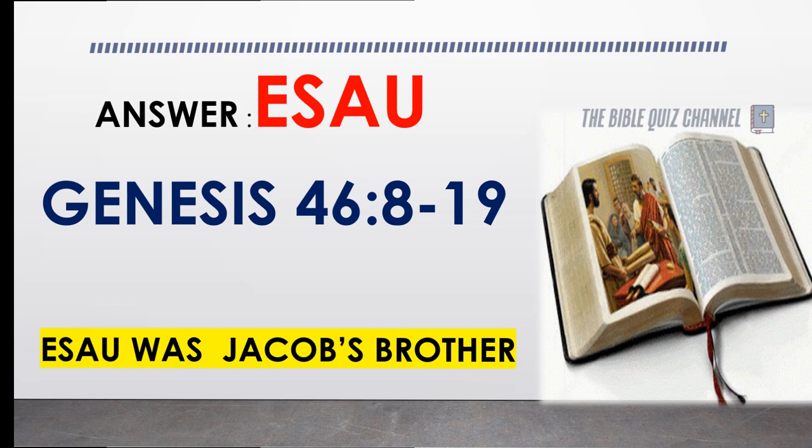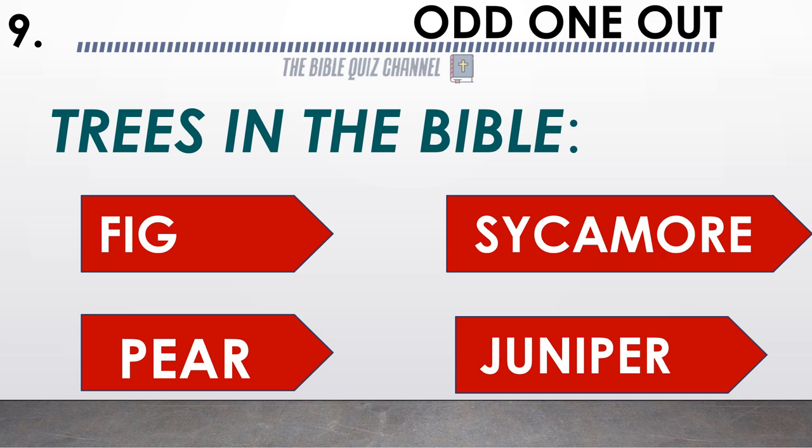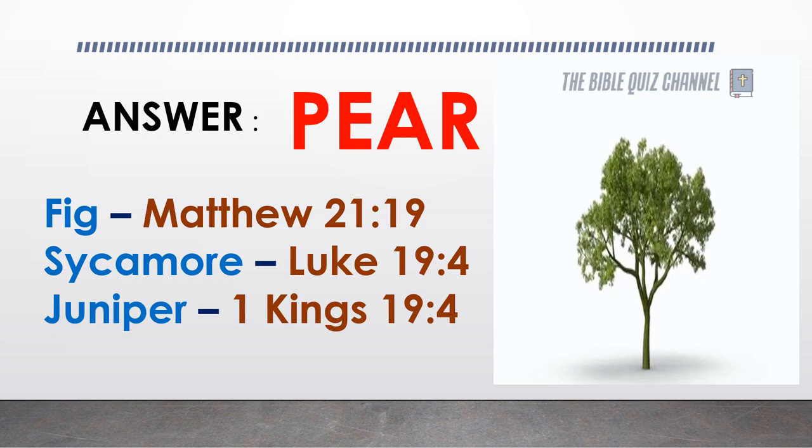Trees in the Bible — fig, sycamore, pear, juniper. Identify the odd one out. The odd one out is pear.